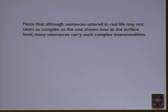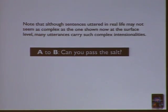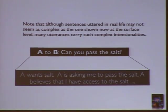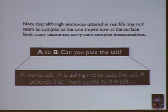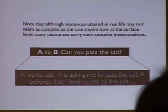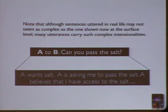Even in a sentence like 'Can you pass the salt?' there are a lot of things that happen in the background that need to be represented by any formal account of natural language processing. For example, you need to understand things like A wants salt, and A believes that B has access to the salt, otherwise you wouldn't be asking. These things either arise from subsequent processing of the formal structures derived from this statement, or they are assumptions that hold before you do the processing.